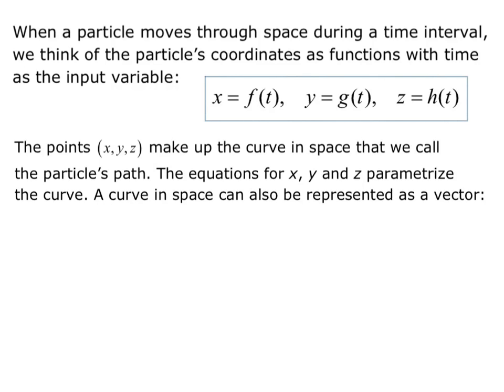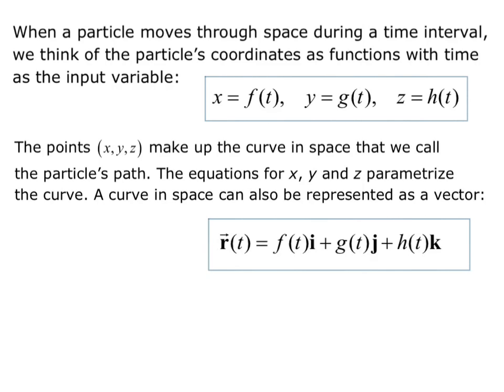A curve in space can also be represented as a vector. As a vector, we would have r of t equals f of t i, plus g of t j, plus h of t k. So we can interchange these two ways of writing a curve in space. The i component is just the x function, the j component is the y function, and the k component is the z function.